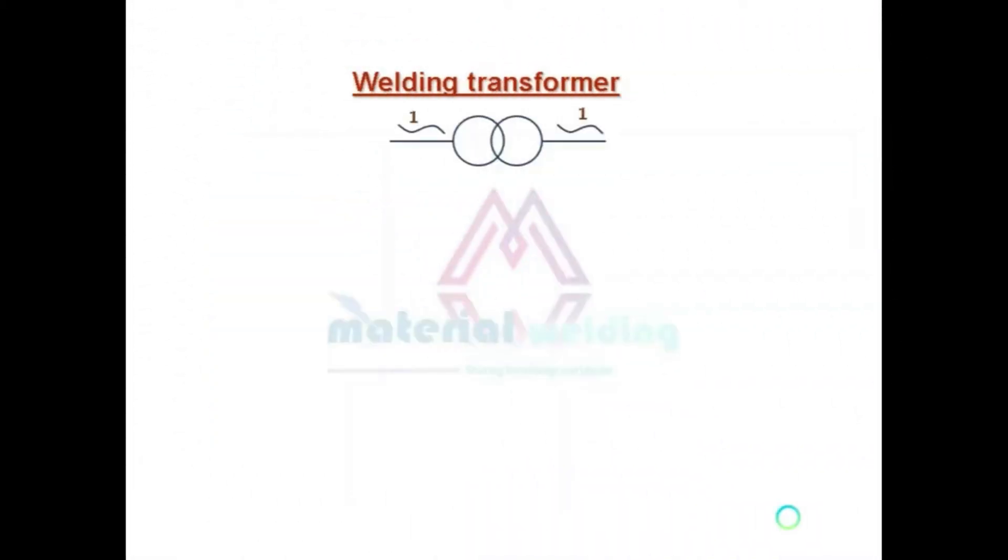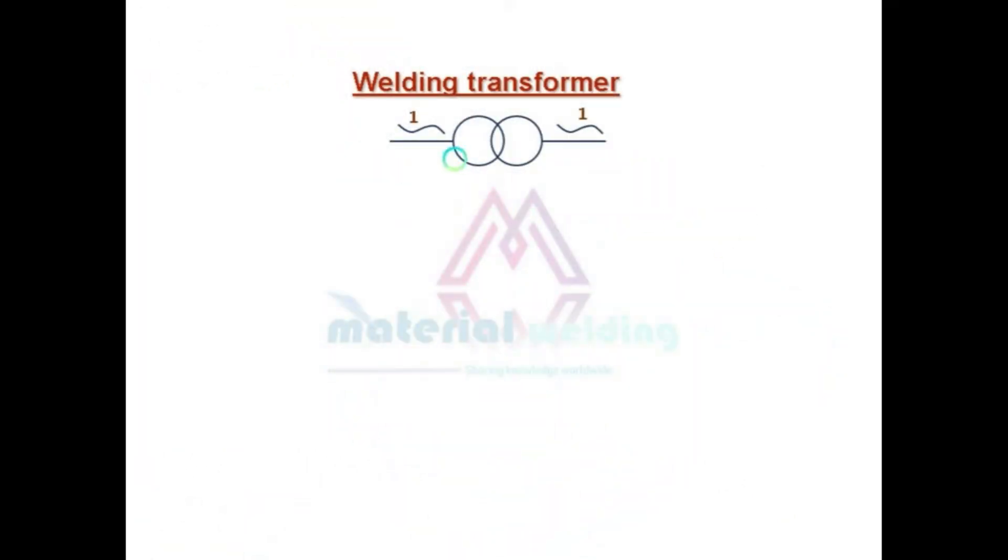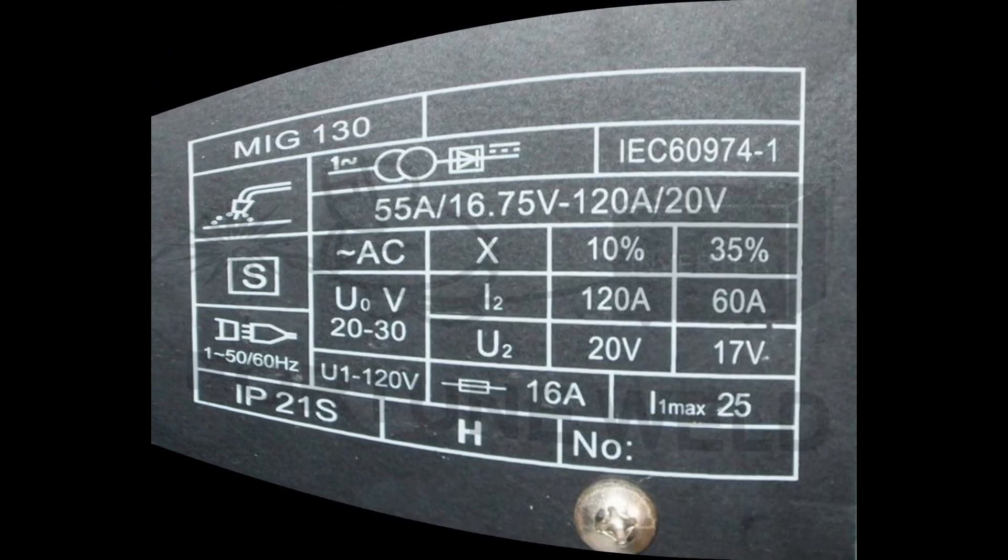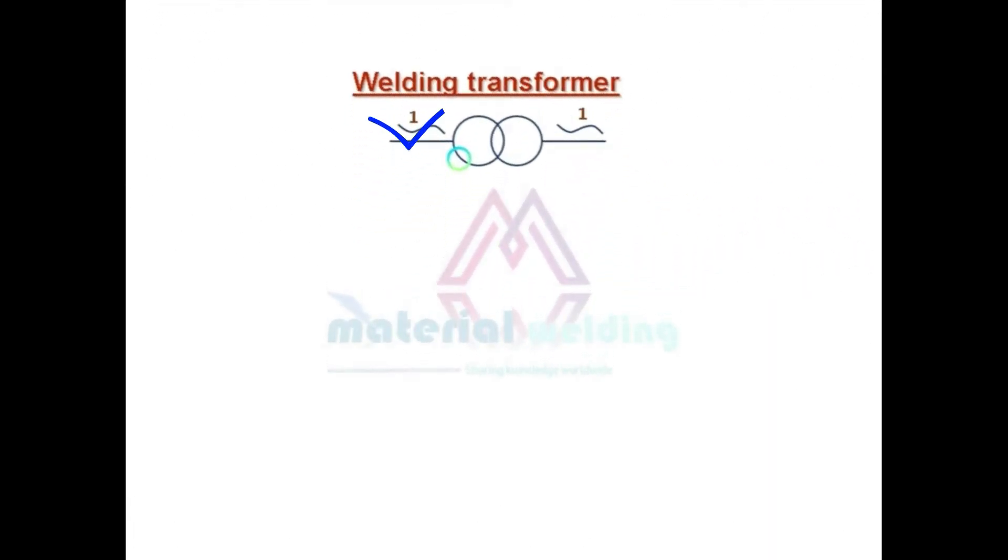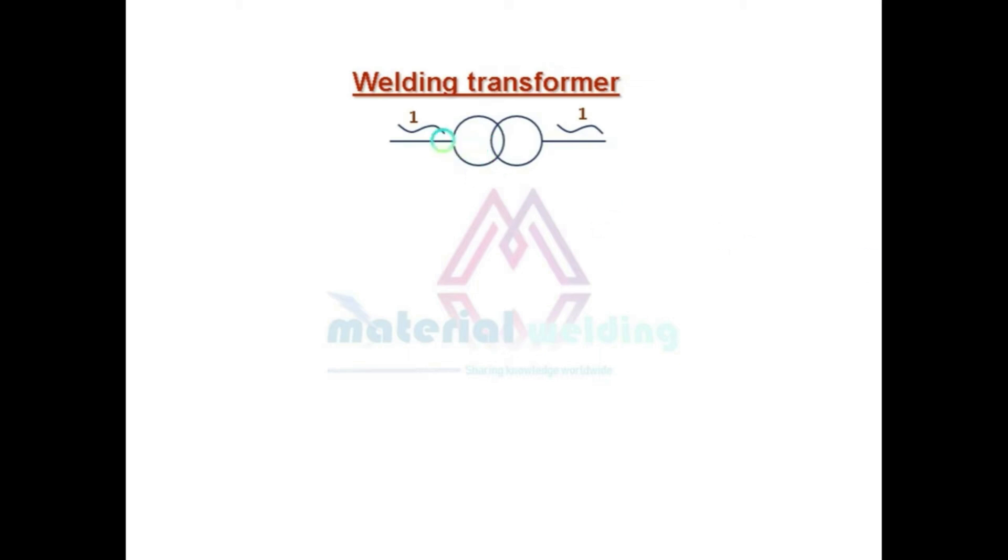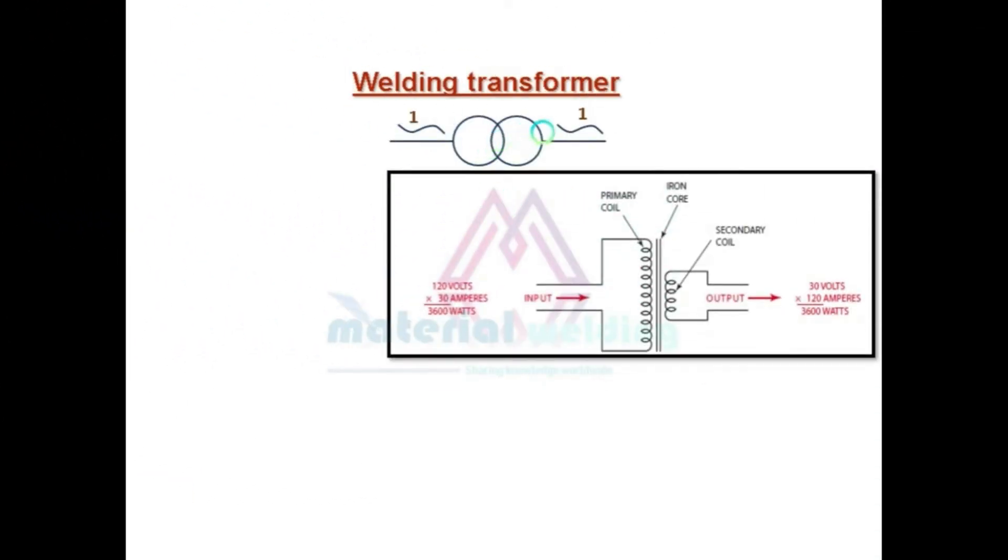So let us start with transformer type. We are not going to display this transformer. Here a graphical representation of welding transformer symbol is shown. You will find this symbol on the name plate available on welding transformer. Here one means single phase, and this is for alternating current or AC at input supply to transformer and single phase. Alternating current is received at the output.